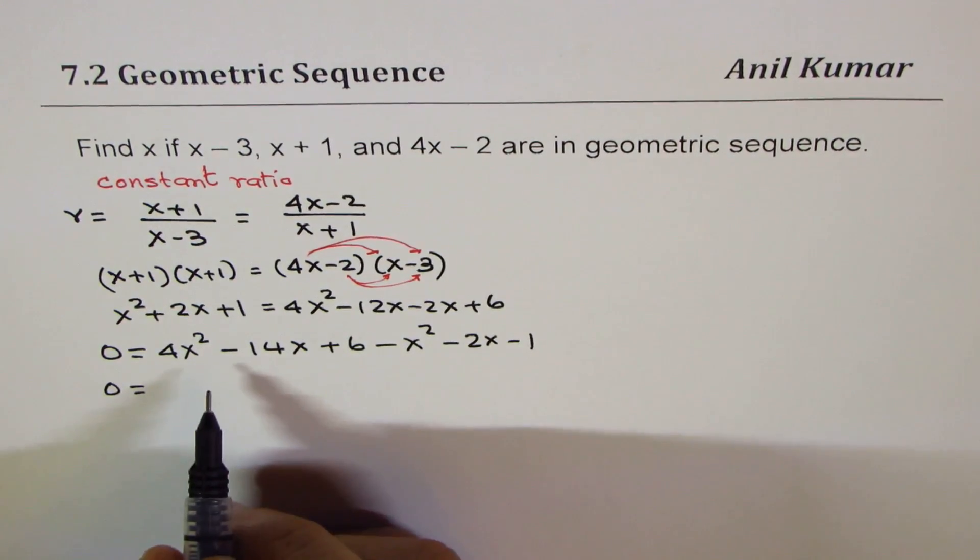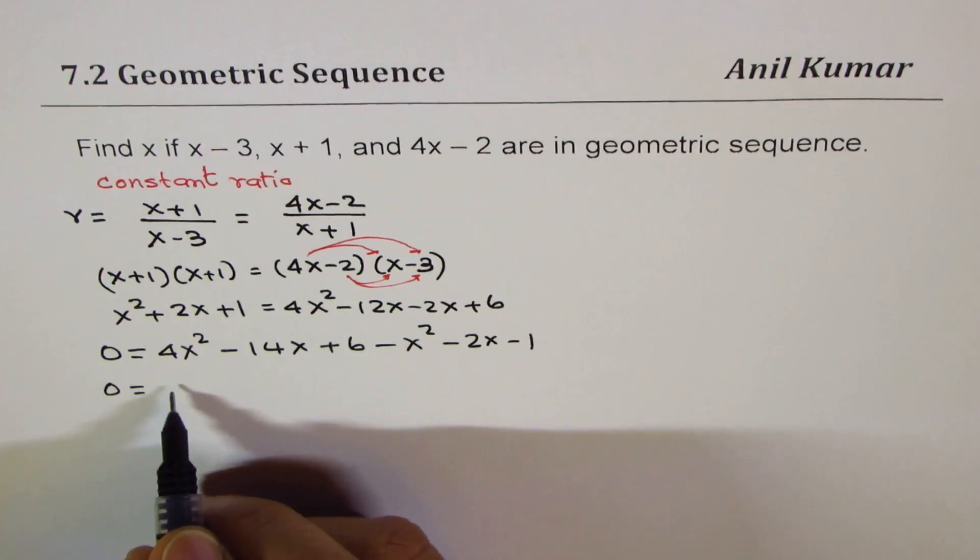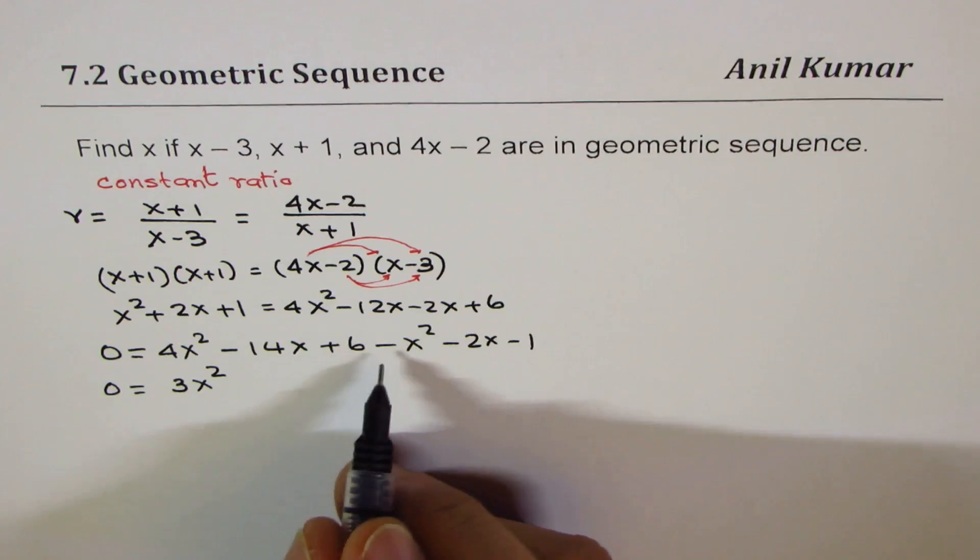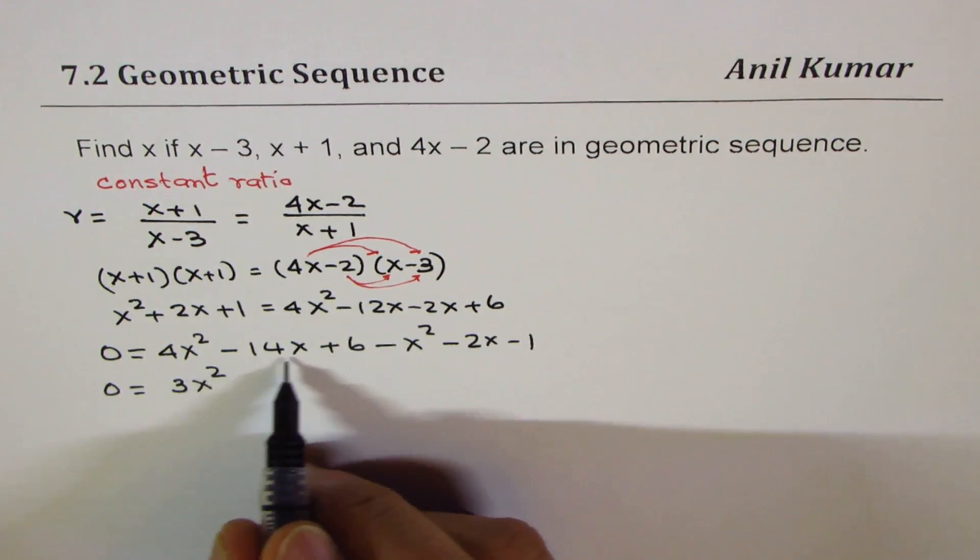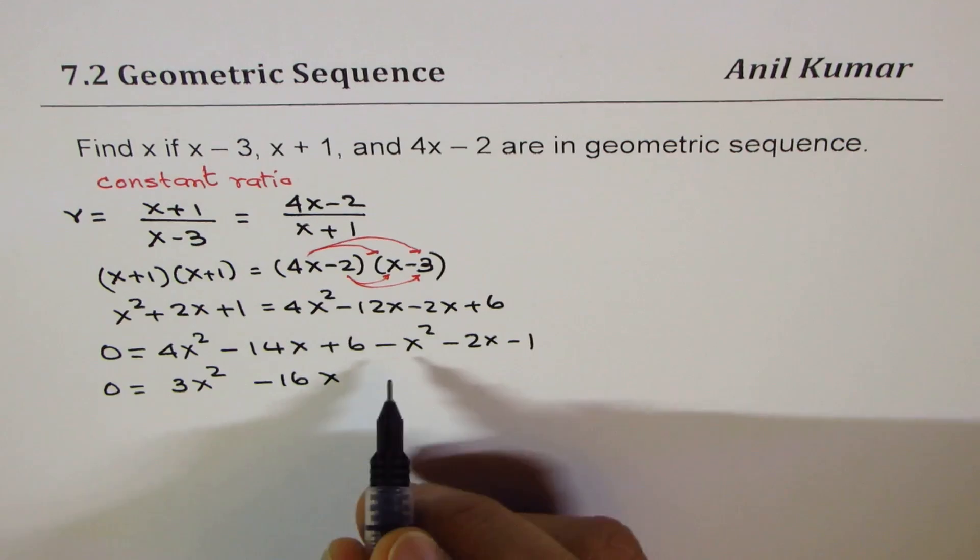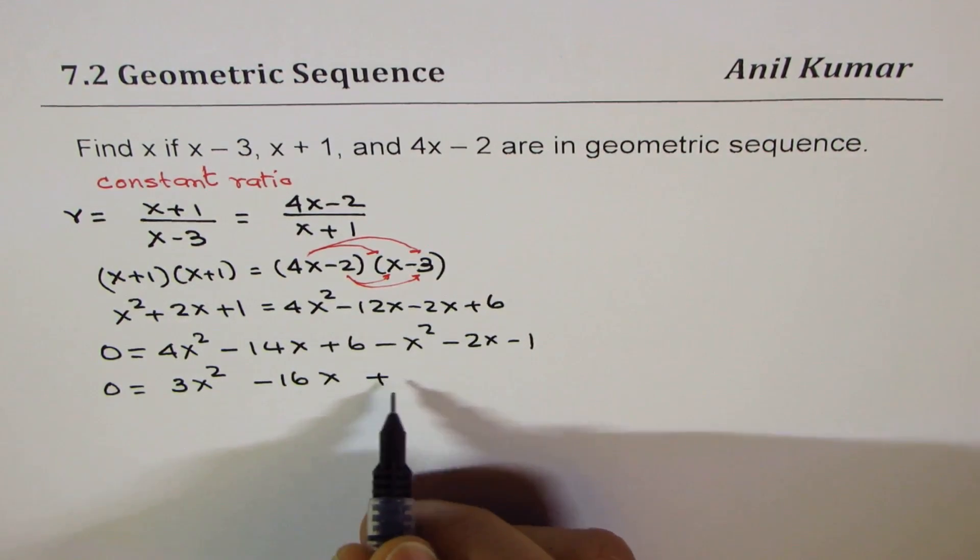So that gives us 0 = 3x² - 16x + 5. That's 4x² take away x² is 3x², minus 14x and minus 2x is -16x, and 6 minus 1 is 5.